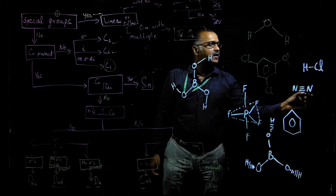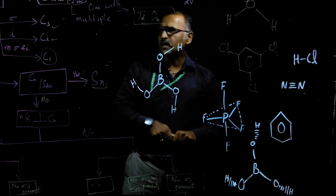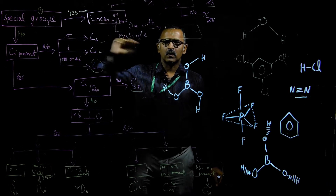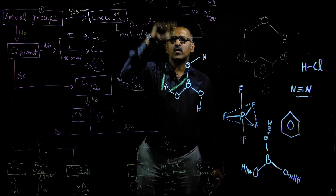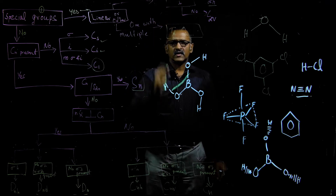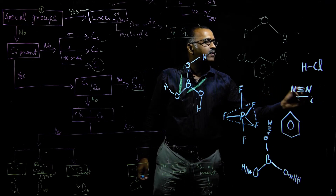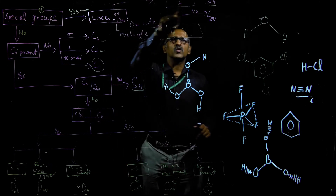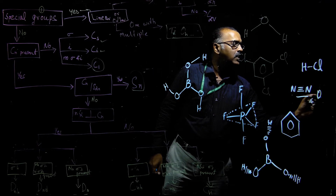Let us start with simple examples. First, nitrogen (N₂). When determining its point group, the first step is to check whether it belongs to a special group. Nitrogen is a linear molecule, so yes, it is a special group. Since it is linear, we check for inversion symmetry. Nitrogen does have inversion symmetry — going from one nitrogen to the other and to the opposite side, you find a nitrogen atom in both directions. Therefore, the point group of N₂ is D∞h.